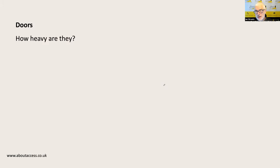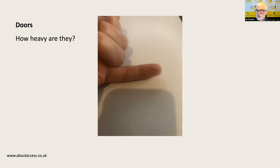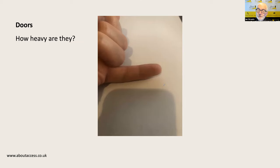On doors — how heavy are they? We all have a tool with us: our little finger. The rule of thumb is if you can easily open the door with your little finger, the door weight is going to be fine. I use my non-dominant hand — I'm right-handed, so I use my left — and if I can easily open the door with my little finger, the weight is about right. I do carry a spring balance that measures in newtons for formal audits, but generally the little-finger test works.